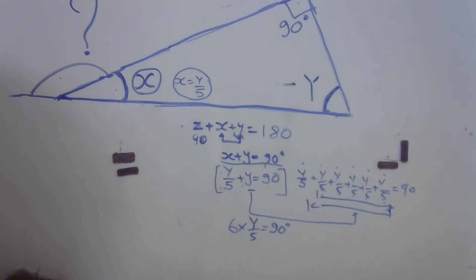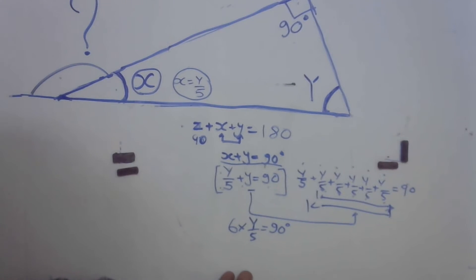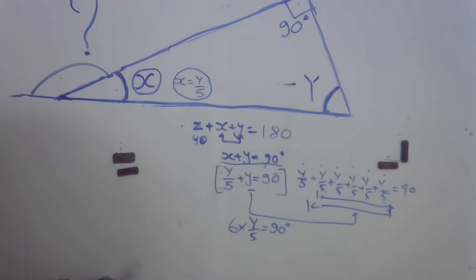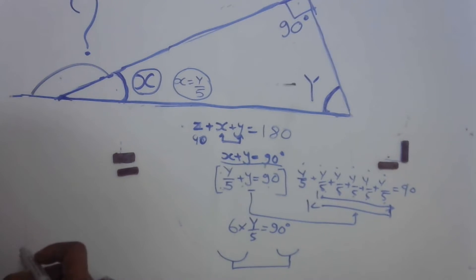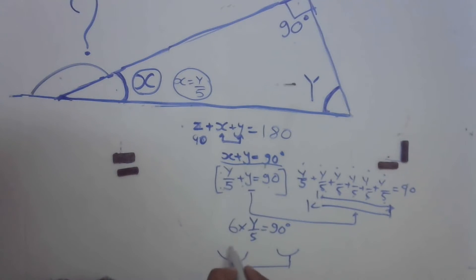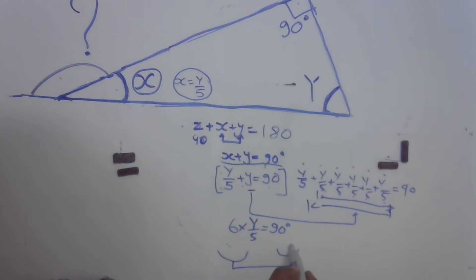This is the same ratio idea we've used so many times before — now it appears in a geometry context. Think of a balance: we have one-fifth of y plus y on one side equaling 90 degrees. Now six times one-fifth of y is on one side and 90 degrees is on the other — they are balanced.